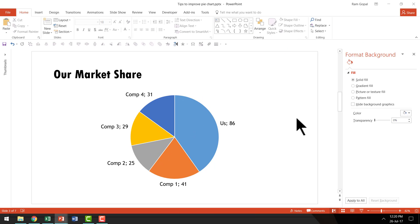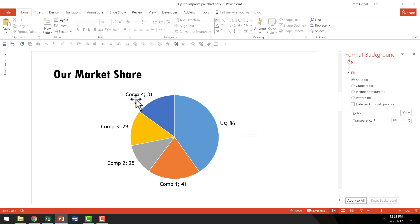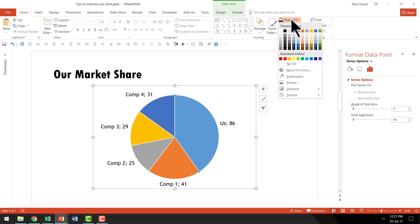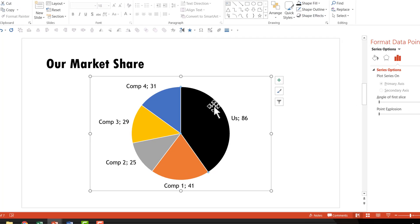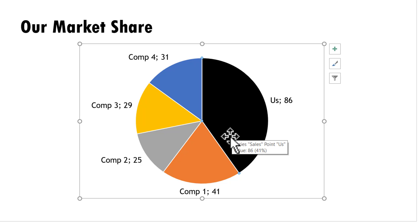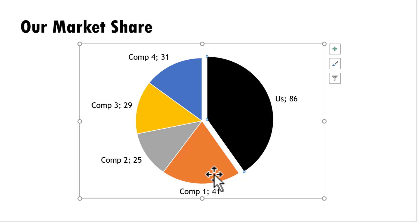Now let's go to Tip 2 to take this to the next level — highlight the key point. This chart shows how we perform compared to competitors, so it's essential to show our performance distinctly. I'll click on the chart to select all segments, then click on my specific segment to isolate it, go to 'Shape Fill,' and give it a distinct color — black works well here. Then I'll click and drag that segment slightly outside to visually separate it from the rest.